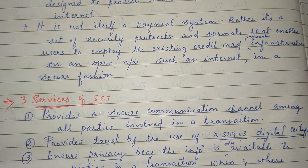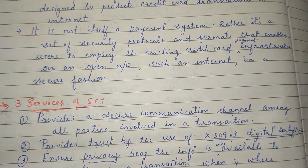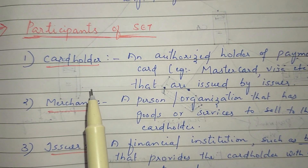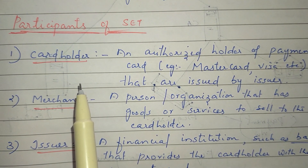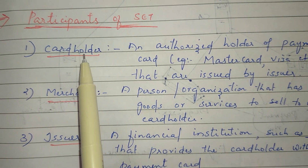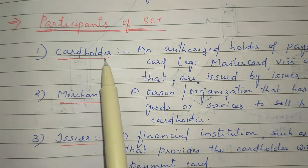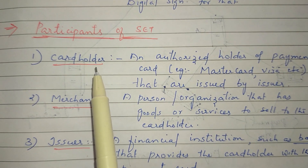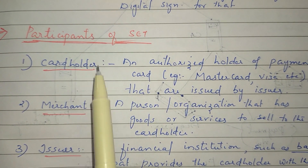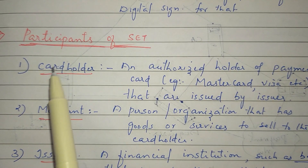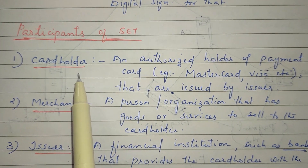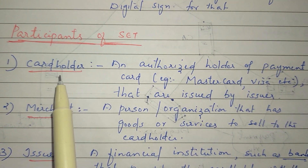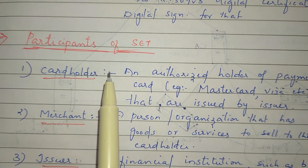Now, we have to use Secure Electronic Transactions and its participants. We have to use credit card transactions. The first participant is the card holder — the person who holds a payment card such as Mastercard, Visa, or a credit card. We have to identify those cards as a personal authorized card.